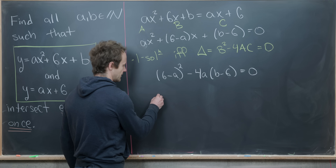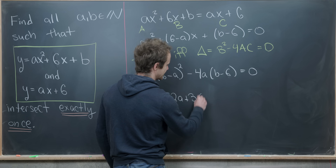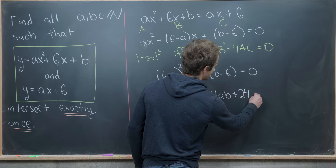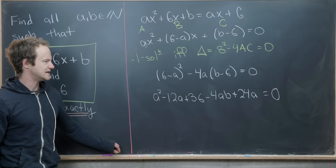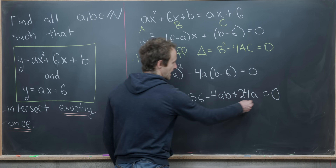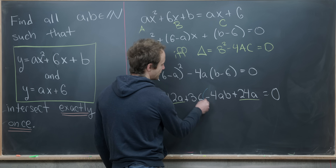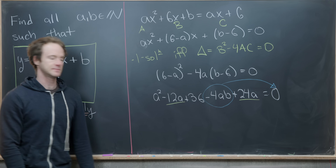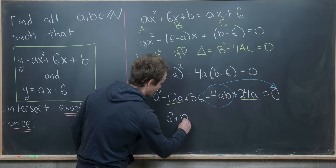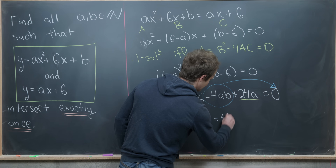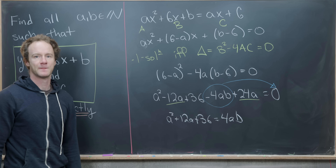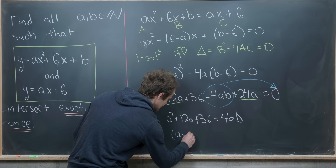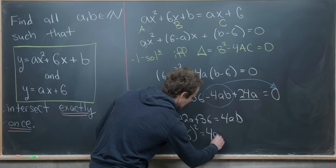Squaring the term gives a² − 12a + 36, minus 4(ab − 6a) = 0, which expands to a² − 12a + 36 − 4ab + 24a = 0. Combining like terms and moving −4ab to the other side gives a² + 12a + 36 = 4ab. The left side factors nicely as (a + 6)² = 4ab.